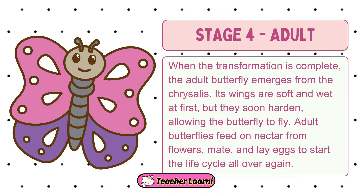Stage 4 – The Adult Butterfly. When the transformation is complete, the adult butterfly emerges from the chrysalis. Its wings are soft and wet at first, but they soon harden, allowing the butterfly to fly. Adult butterflies feed on nectar from flowers, mate, and lay eggs to start the life cycle all over again.